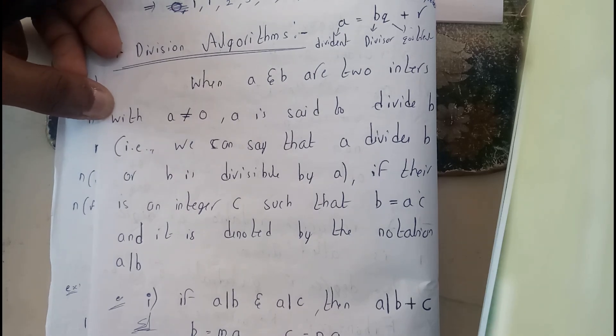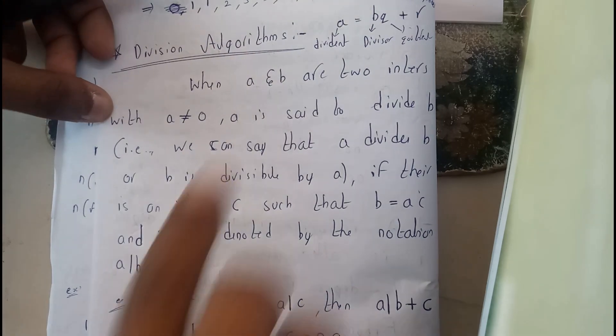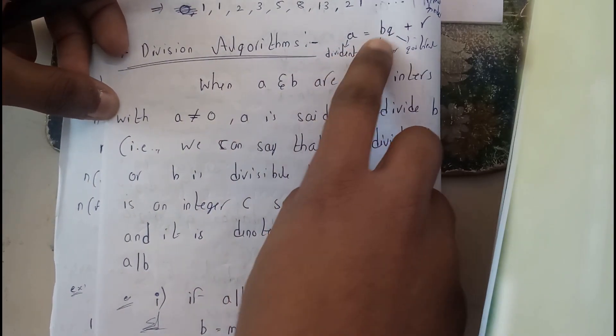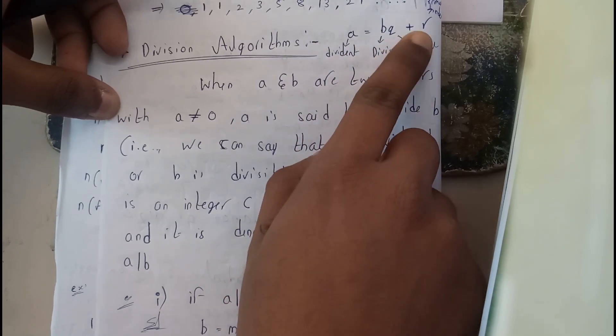Dividend equals divisor times quotient plus remainder is the division algorithm. In which I have assumed that a equals bq plus r, where a is the dividend, b is the divisor, q is the quotient, and r is the remainder.